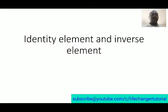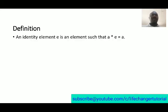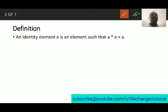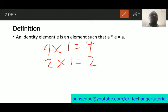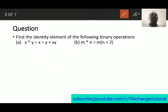Hello, today we are going to be looking at identity elements and inverse elements, which is a conclusion to the series on binary operations. We start with identity elements: e is an element such that a star e equals a. In multiplication, any number multiplied by 1 is that number — 4 times 1 is 4, 2 times 1 is 2 — so 1 is the identity element. In any binary operation, an identity element is such that when you operate it with an element, the result equals that element.